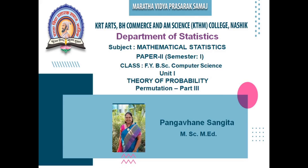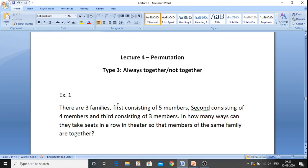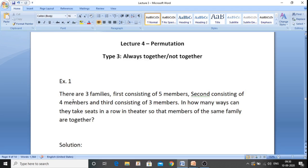Now let us see the third type of problem — where some letters, consonants, or vowels are always together or not together. The first example of this type: there are three families. The first consists of five members, the second consists of four members, and the third consists of three members. In how many ways can they take seats in a row in a theater so that members of the same family are together?